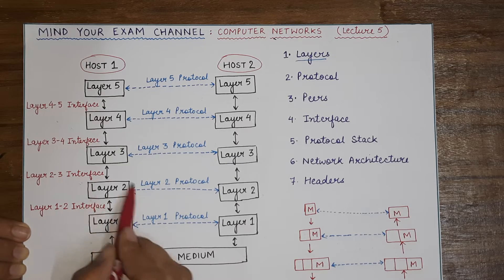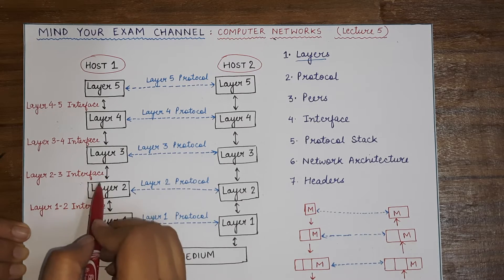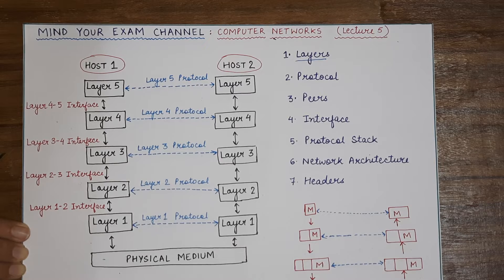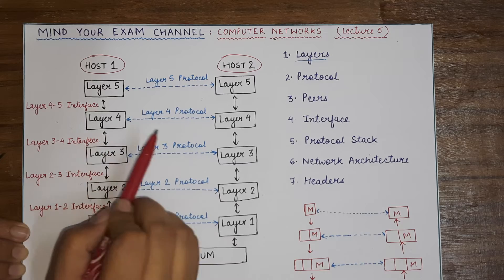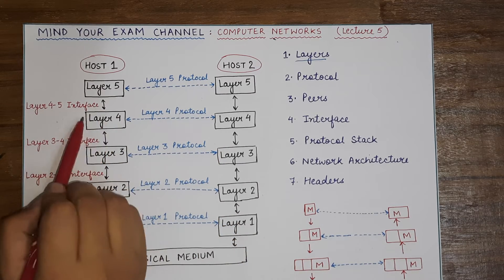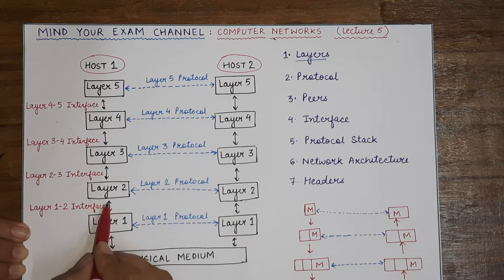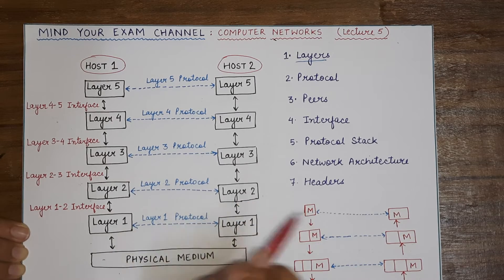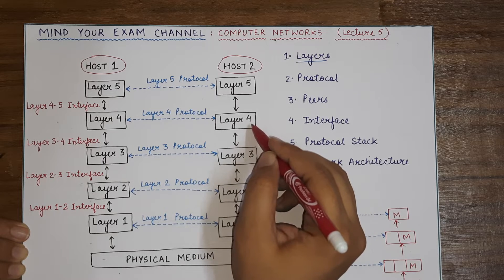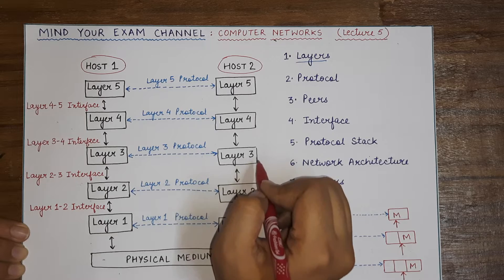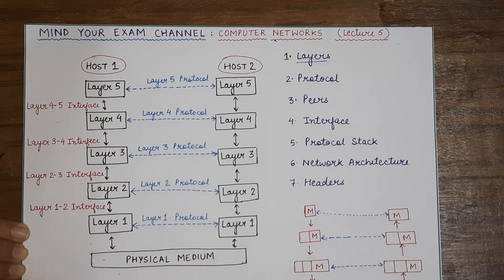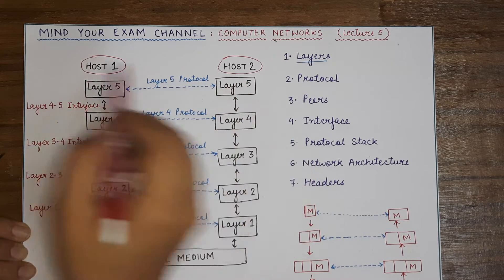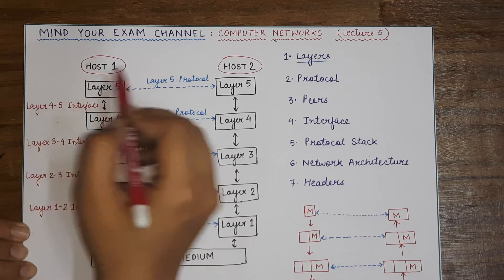The multiple layer concept exists to divide the entire task of communication. Every layer present below its higher layer provides some functionality to the higher layer and also hides unnecessary details not required by the higher layer. So layer 1 provides services to layer 2, layer 2 to layer 3, and so on. At the same time, layer 4 will never share details about its functioning that are unnecessary to layer 5.